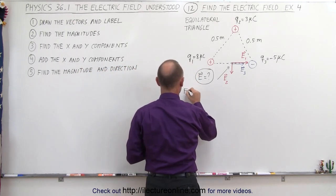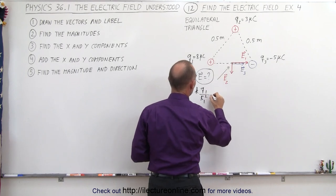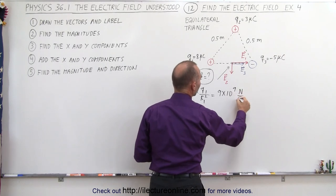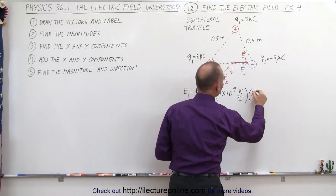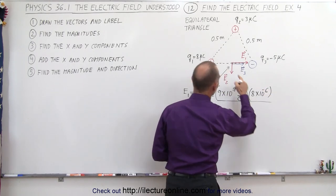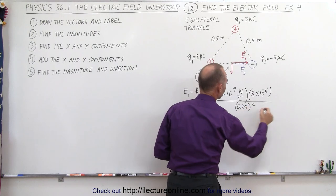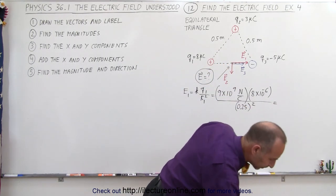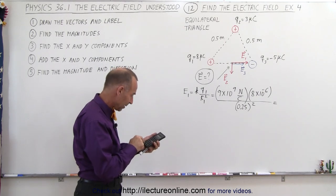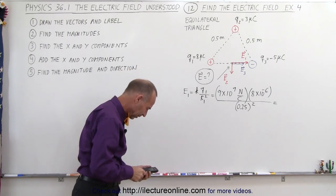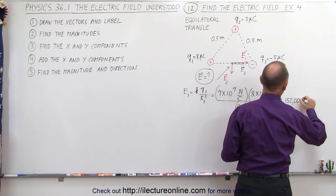E1 is equal to K times Q1 divided by the distance from Q1 to the point of interest squared. This is equal to 9×10⁹ N/C times 8 microcoulombs (8×10⁻⁶ C) divided by the distance squared. The distance between the charges is 0.5 m, so half the distance is 0.25 m, and we square that. Calculating: 9×10⁹ × 8×10⁻⁶ ÷ (0.25)² = 1,152,000 newtons per coulomb.